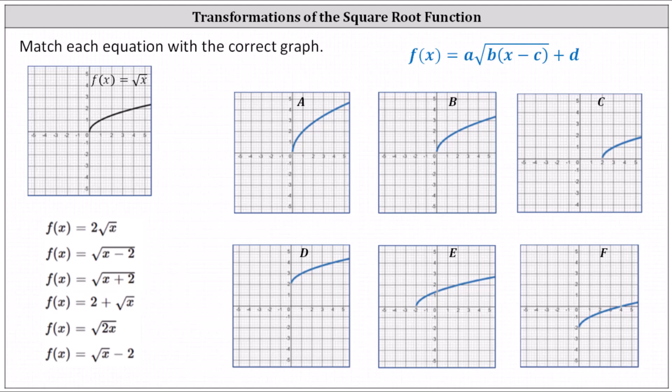If we have a transformation of the square root function, we can write the function in the form of f(x) equals a times the square root of the product of b and the quantity x minus c, plus d, where the values of a, b, c, and d determine the type of transformation.